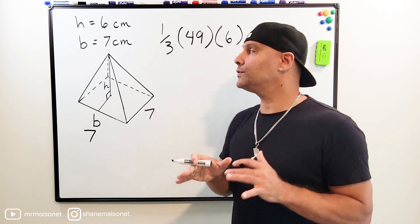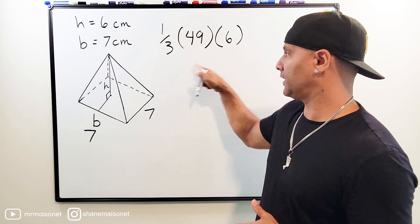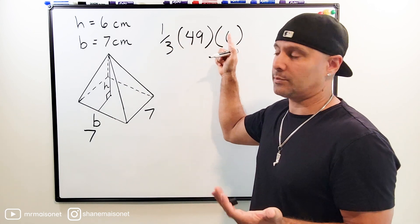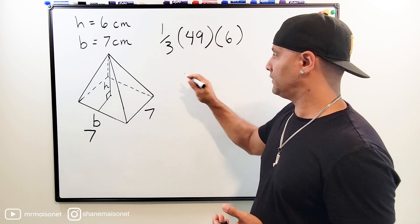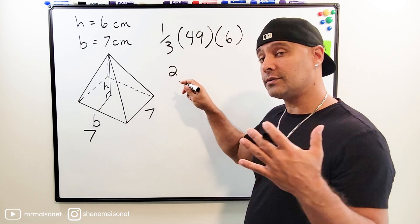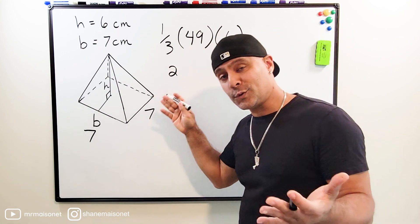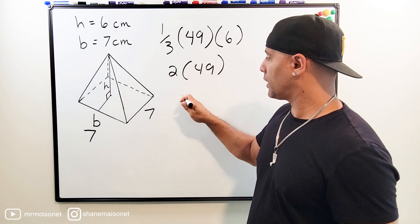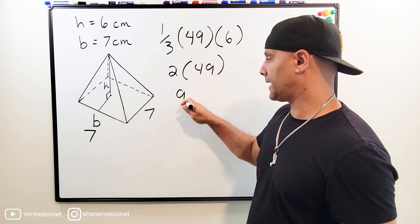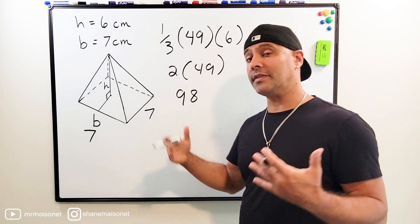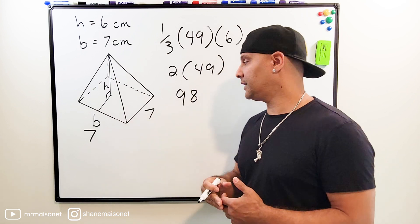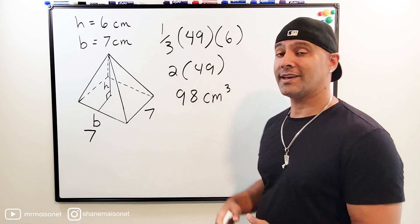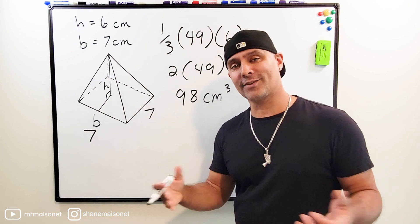What we're going to do first is take one third of 6, because that's mental math — we can equally divide 6 by 3, and a third of 6 is equal to 2. So all we have to do now is take 2 and multiply that by 49, which gives us a product of 98. So the volume of this square pyramid is equal to 98 cubic centimeters. And that's all there is to it.